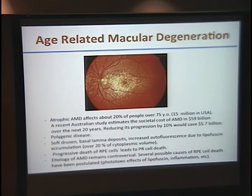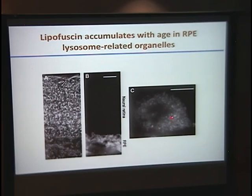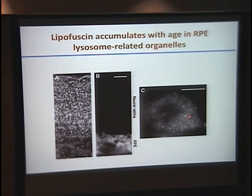Lipofuscin is a fluorescent material that accumulates with age in the RPE. When you look at an RPE cell loaded with lipofuscin, you see dotted elements in the cytoplasm — those dots are lysosomes. The lipofuscin is a material that accumulates in lysosomes in the RPE, and also accumulates in many organs with age. But the lipofuscin that accumulates in the brain, for example, is completely different from that in the eye. The ceroid lipofuscin in the brain is mostly protein-based, while lipofuscin in the eye is mostly lipid-based.